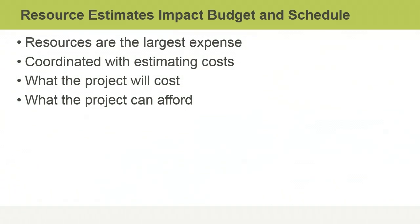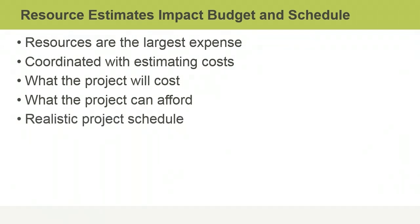In addition to providing information used to create the project budget, activity resource estimates provide information needed to create a realistic project schedule. For example, if certain equipment or human resources are available only on particular dates, this will affect when you can schedule relevant activities.